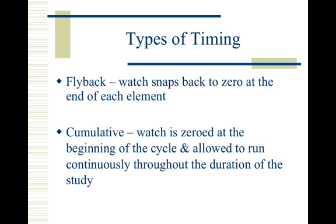There are two types of timing we'll cover in this class. First, we have flyback, also known as snapback timing. This is the same method used in races to keep track of times for multiple laps, done by using the split function. Cumulative, also known as continuous timing, is the method you will be using in lab. The cumulative method involves letting the stopwatch run all the way through the cycle and reading the watch at the break point of each element. One negative to this method is that it requires a little bit of work to calculate elapsed element times.